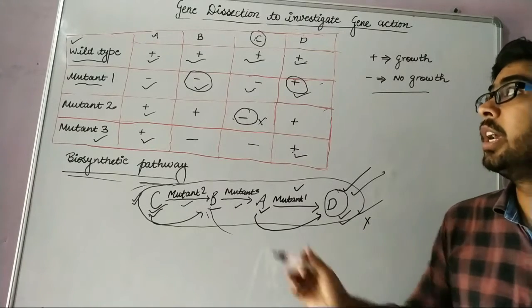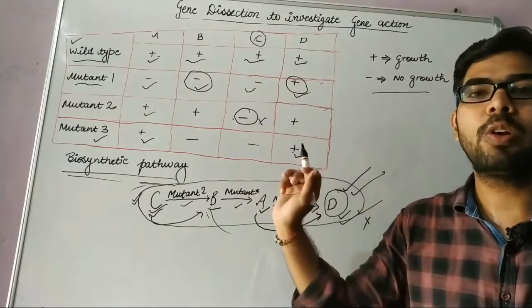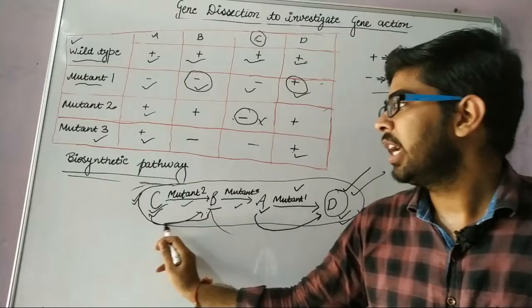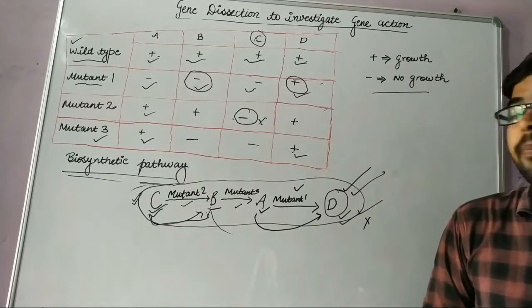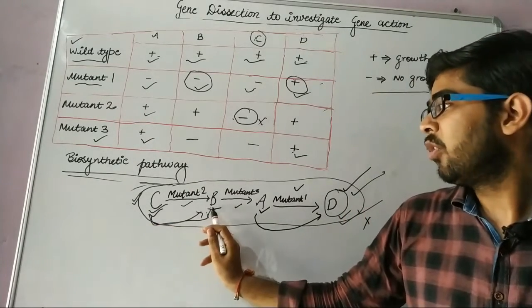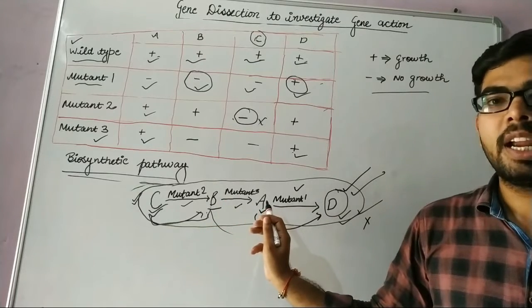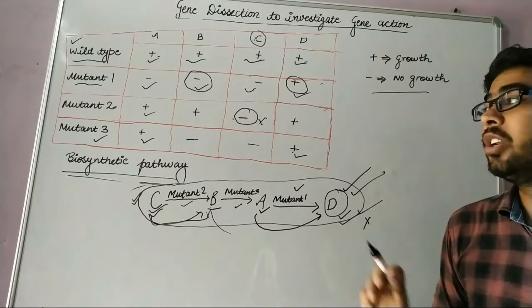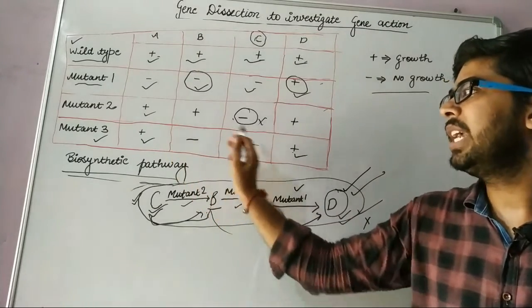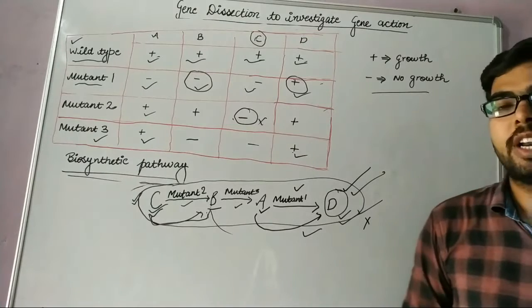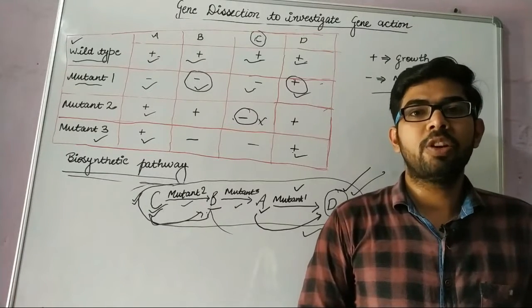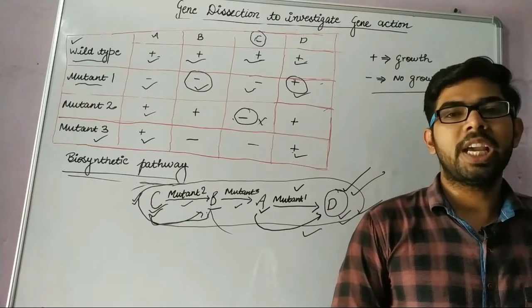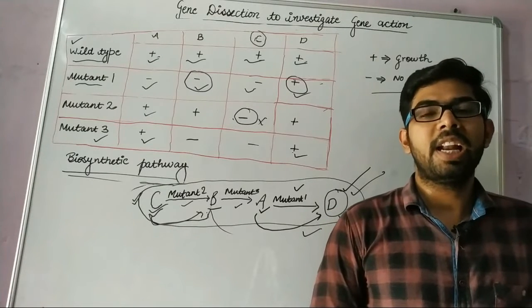But when B and C are added to mutant 3, they are prior to the mutant 3 region. B cannot be converted into A, and A is not further converted into D, so there is no growth with B or C. This confirms our correct pathway order. If you find my video useful, please like, subscribe, and share with your friends. Thank you and have a nice day.